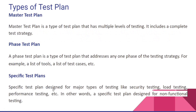We have multiple levels of testing — a complete testing strategy. The initial level includes unit and acceptance testing. The Master test plan covers that, and the phase test plan covers each phase. The specific test plan covers major types like security, load, stress, and performance testing — for example, using JMeter. This is non-functional testing.